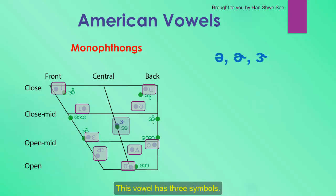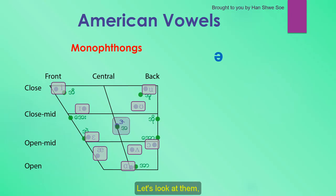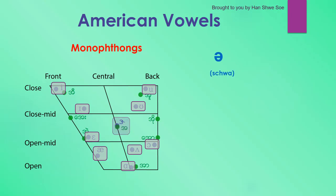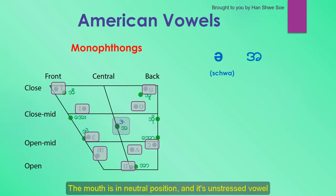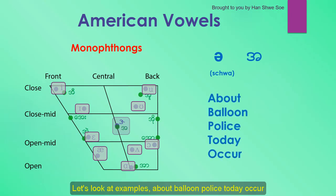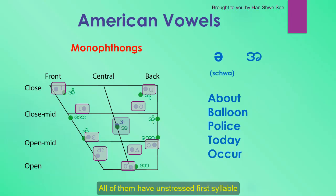The next vowel has three symbols. The first one is the unstressed vowel, and the other two are R-colored vowels. The first symbol is a special vowel — it even has a name. It's called schwa, and it's pronounced as a neutral U sound. The mouth is in a neutral position and it's unstressed. Examples: about, balloon, police, today, occur. All of them have an unstressed first syllable.